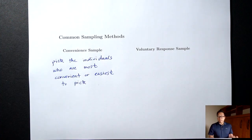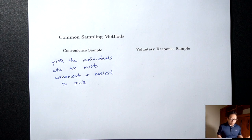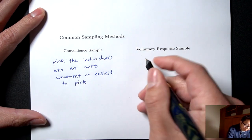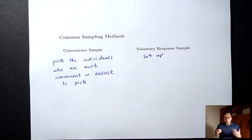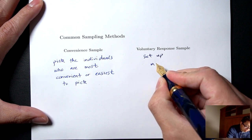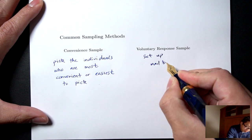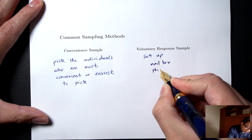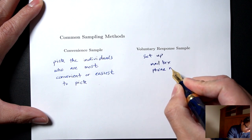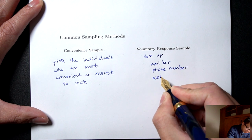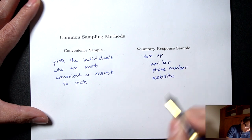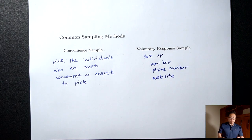The next sampling method is called voluntary response. In this situation, you're setting up something like a mailbox, a phone number, or a website, and then people self-select to participate.